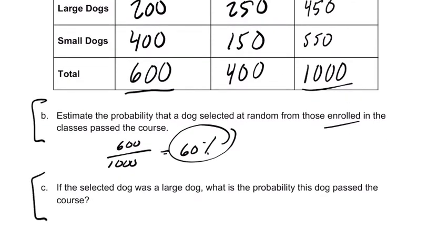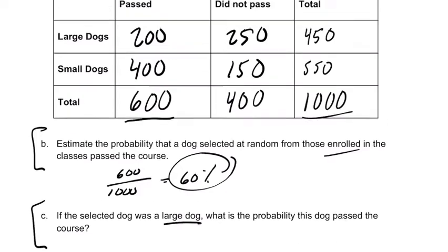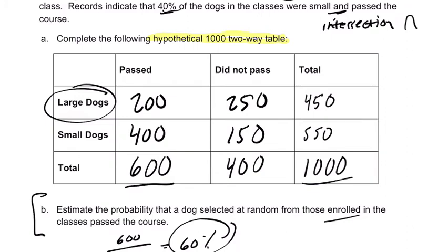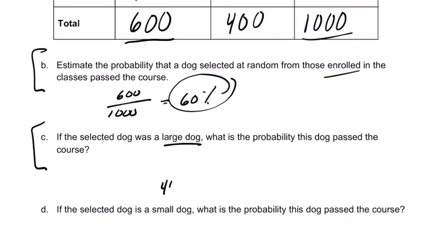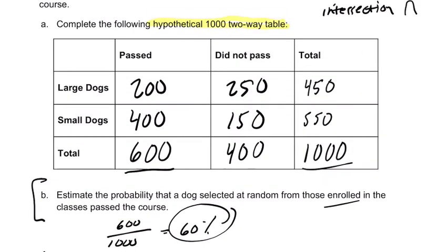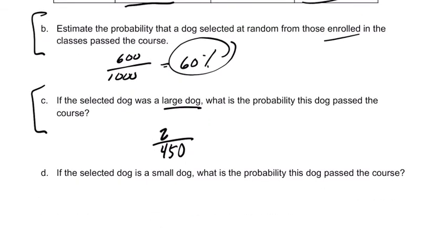If the dog was a large dog — that's our condition — what is the probability that this dog passed the course? Our large dog row is right here; that's our given. There are 450 large dogs, and 200 passed the course. So 200 out of 450, that's 0.44 repeating, about 44.4% of the large dogs passed.